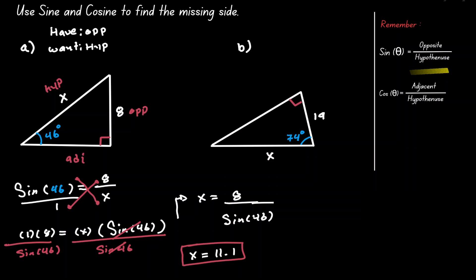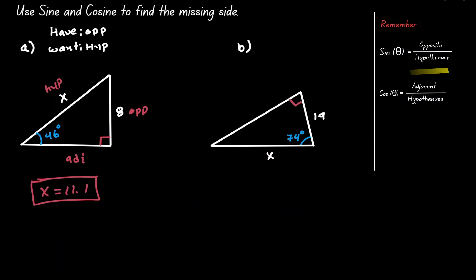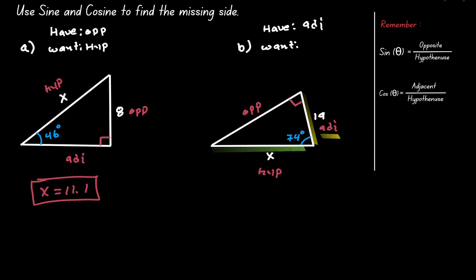Let's move on to the second problem. Let's start by identifying our reference angle, which is 74. Let's label this triangle using this information. To decide which function we're going to use, let's identify what it is that we have and what it is that we want. We have the length of the adjacent side, and we want to know the length of the hypotenuse. Then for this example, we're going to use the cosine function, because it's been defined as adjacent over hypotenuse.